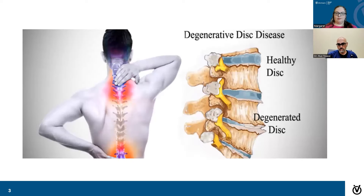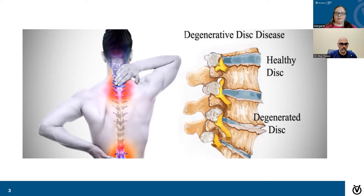Degenerative disc disease is essentially what it means — it's degeneration of those little cushions in your back that provide shock absorption when we lift, push, pull. As these degenerate, we can get worsening arthritis, we can get narrowing of the spine or stenosis. And the discs themselves can cause pain, which we call discogenic pain.